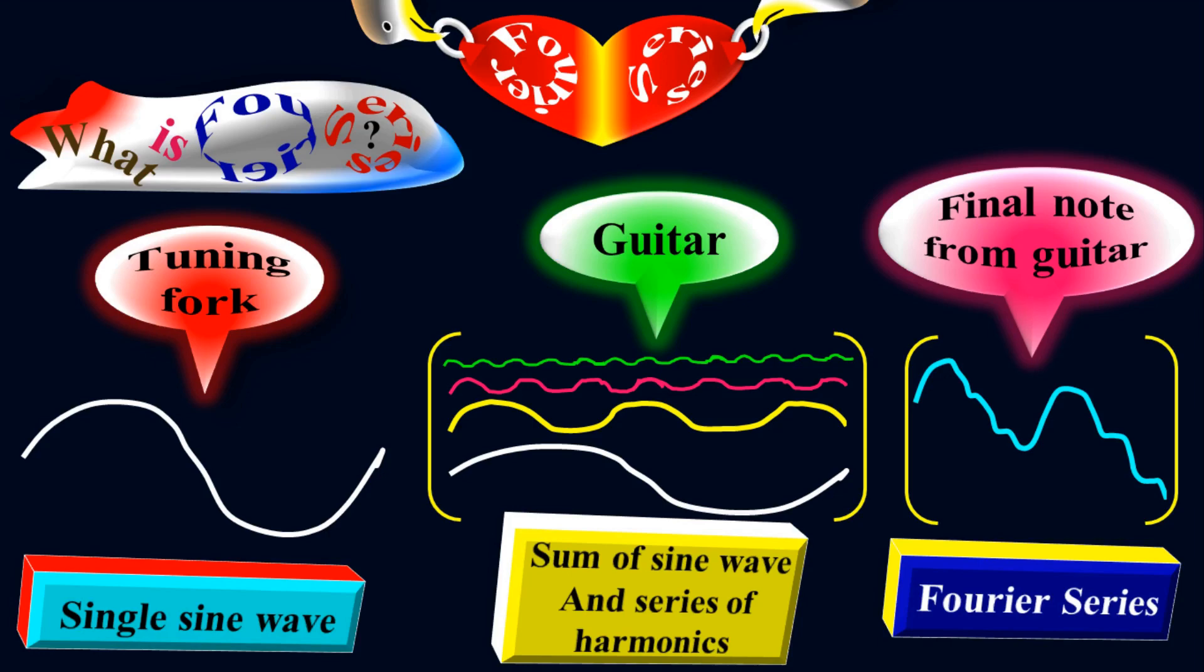But there might be a question in your mind: we defined Fourier series as represented by the sum of sine and cosine functions. But in this case, I have only sine functions. This white fundamental wave is a sinusoidal wave. The harmonics are also sinusoidal waves. But where is the cosine wave?